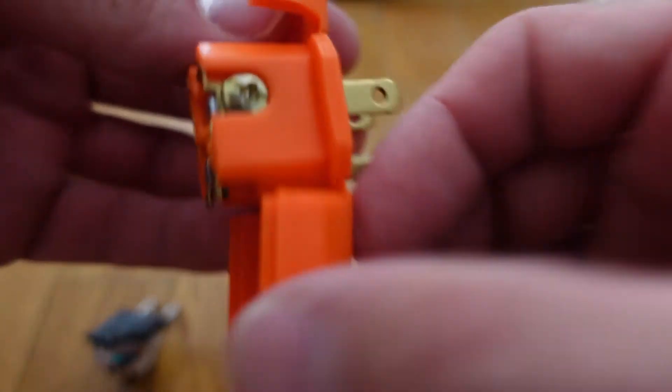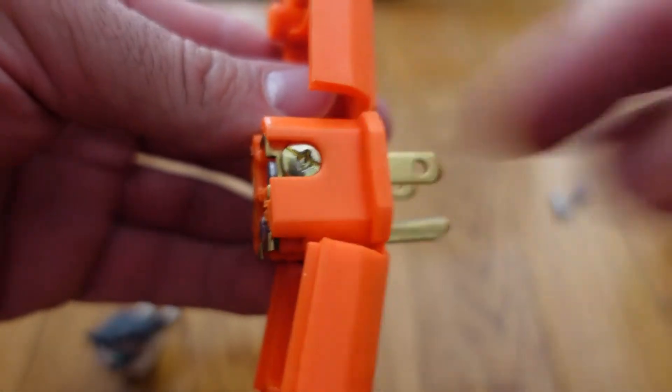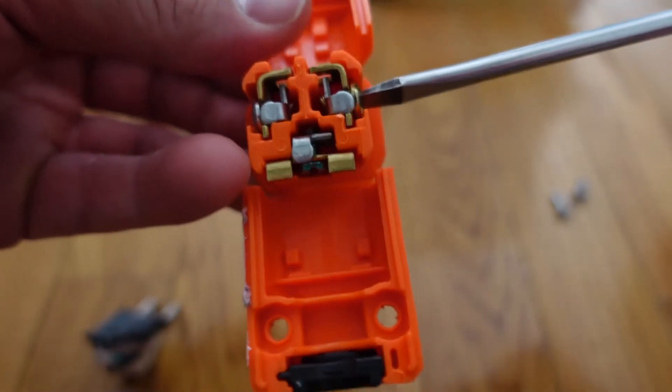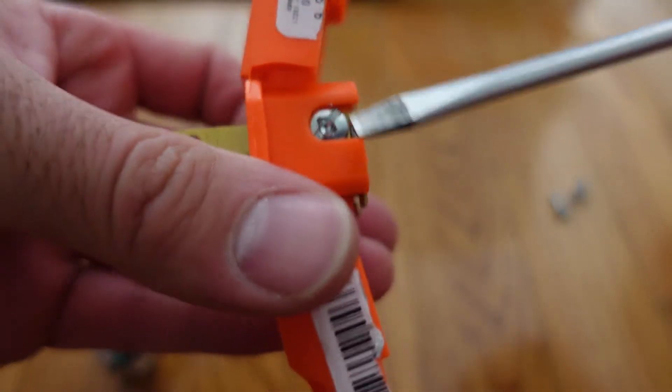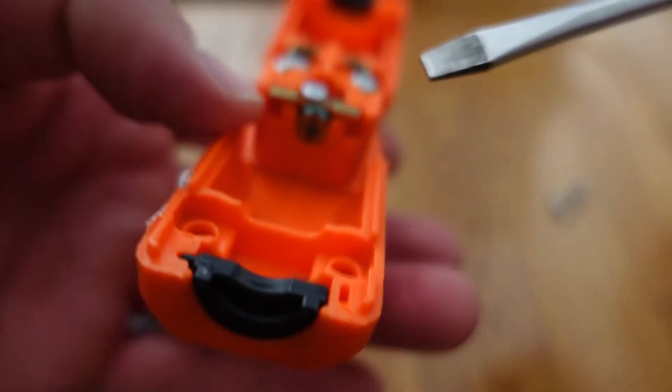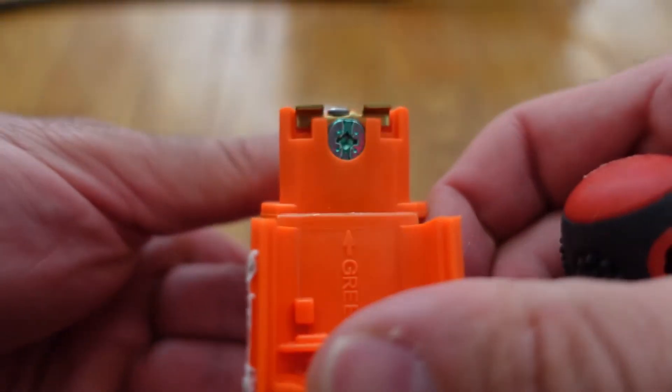For this, the brass colored screw located right there will be where the hot wire will be connected. The silver colored screw will be the neutral where the white wire is connected, and the green screw on the bottom is obviously the ground.